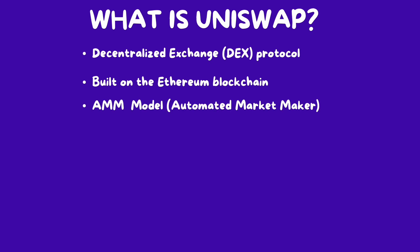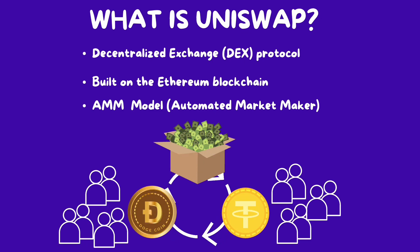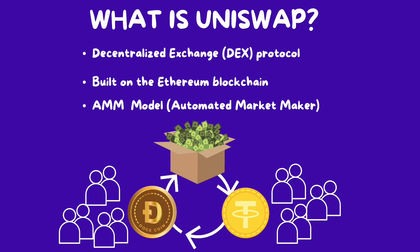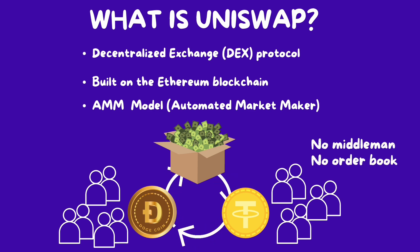The answer is an automated market maker. Uniswap operates on the AMM model, allowing users to trade cryptocurrency directly from their wallets without the need for traditional order books or any middlemen. For example, Bob can swap Dogecoin into USDT through any DEX. The prices are set by the AMM — no need to use an order book for market making.